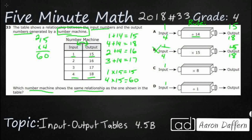Let's check option C — times 8. Using input 1: 1 times 8 equals 8, not 15, so that's incorrect. And 4 times 8 equals 32, definitely not 18. At least times 15 worked for the first pair; times 8 doesn't even come close.